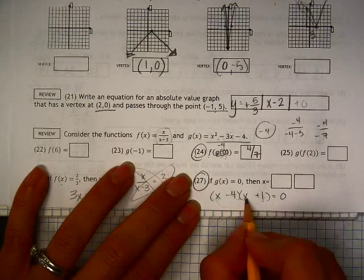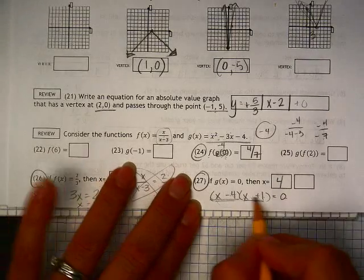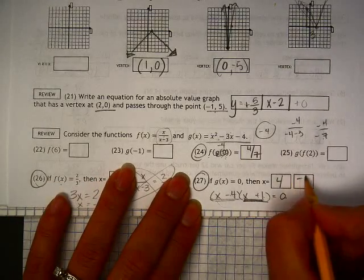Now, these are both equal to 0. So either that is 0 or this is 0. If this is 0, 4 is going to be the answer. If this is 0, then negative 1 will be the answer.